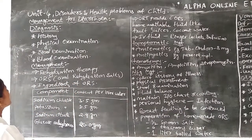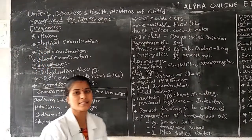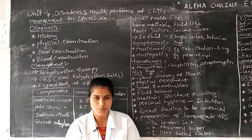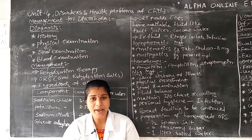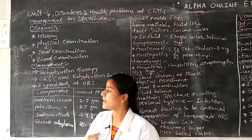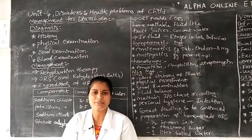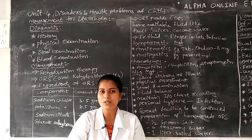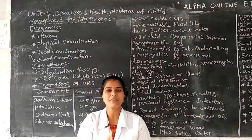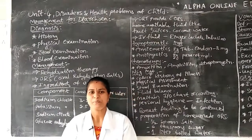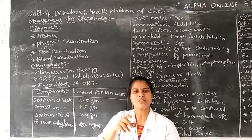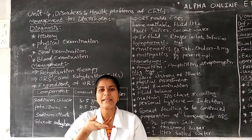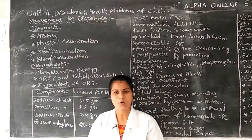The first step is history collection. Once the infant comes to the hospital, we collect the history as a nurse. In history collection there are two types: subjective data and objective data. We discuss both because the infant cannot give exact information regarding diarrhea problems.